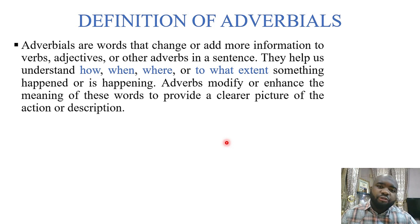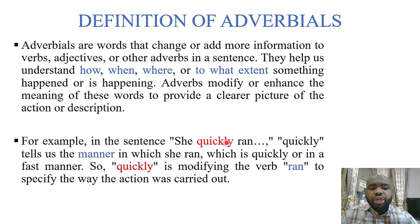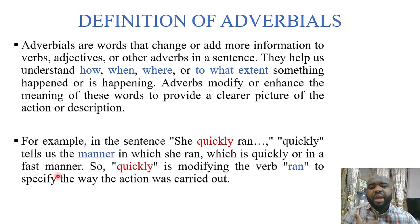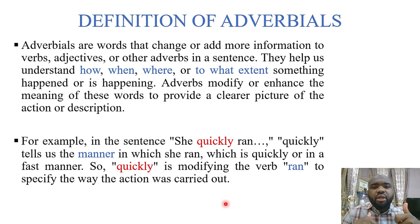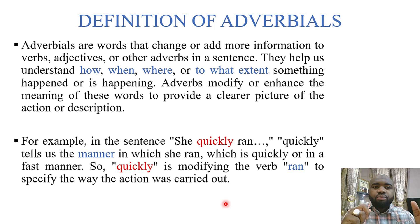For example, in the sentence 'she quickly ran,' the word 'quickly' tells us the manner in which she ran — in a fast manner. So 'quickly' here is modifying, adding more meaning to the verb 'run,' telling you how she ran.